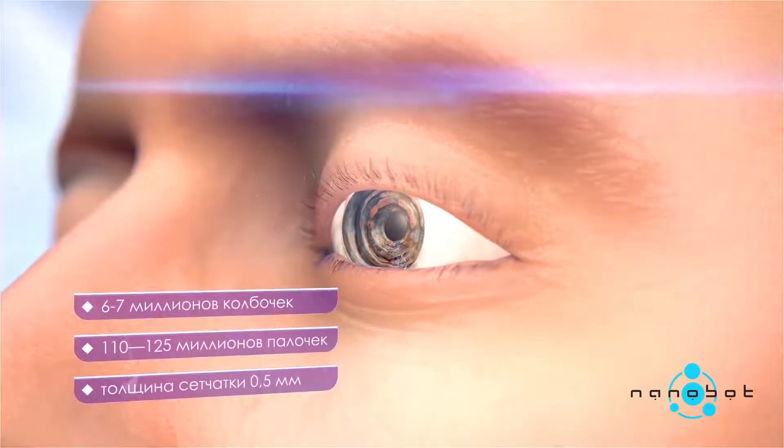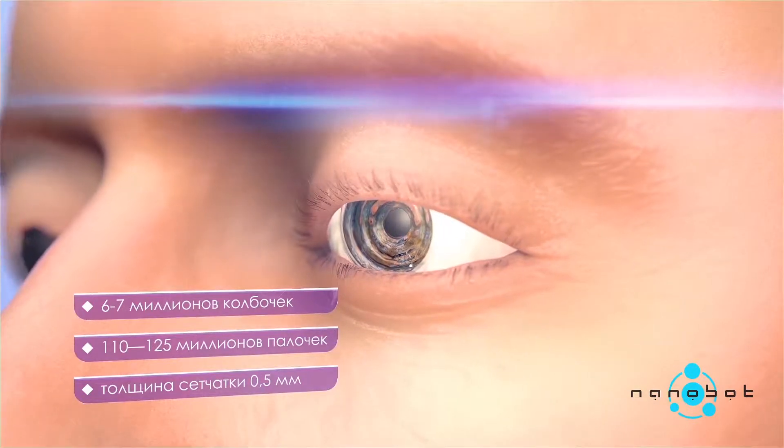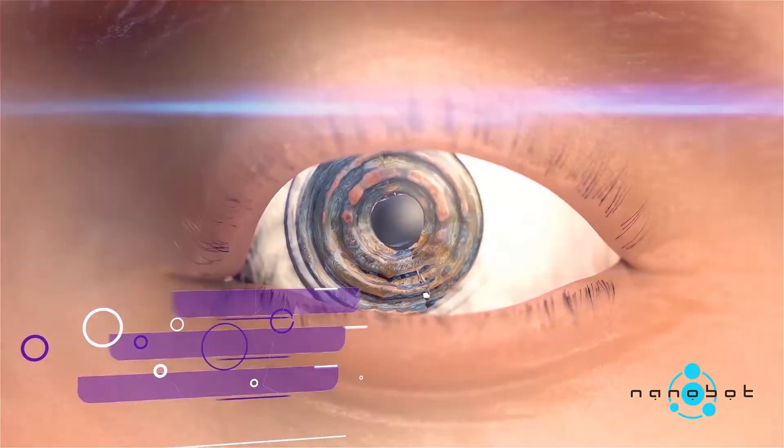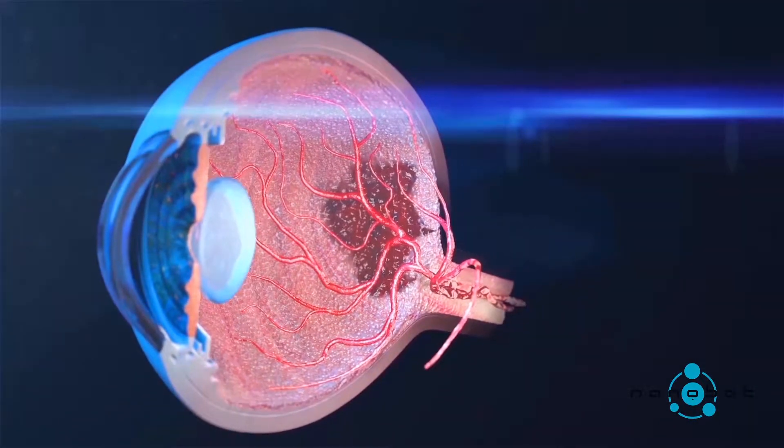The eye is the most complex organ in the human body. Its retina consists of 6 to 7 million cone cells and more than 120 million rod cells. At the same time, its thickness is only 0.5 millimeters.